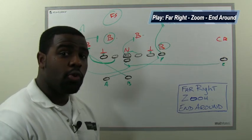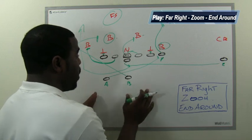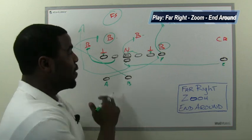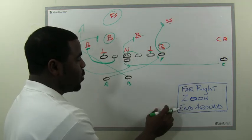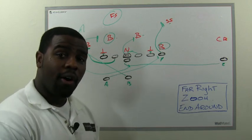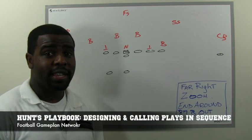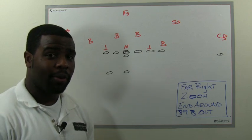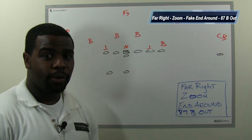That's Far Right Zoom End Around — a very good, productive play. You block this properly and you can have success versus a 50 front. Now we're going to show you the passing play off of this. This is where we're talking about sequencing plays. This pass play off the first play, Far Right Zoom End Around, is called Far Right Zoom End Around 87 B Out.